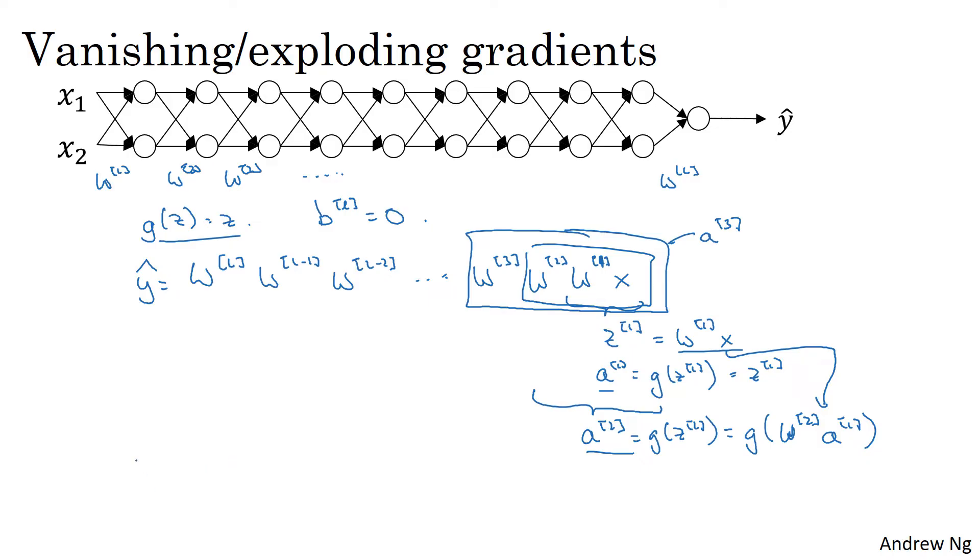Now, let's say that each of your weight matrices, WL, is equal to just a little bit larger than 1 times the identity. So it's [1.5, 0; 0, 1.5]. Technically, the last one has different dimensions, so maybe this is just the rest of these weight matrices.